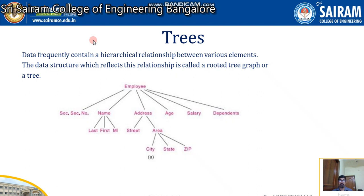Trees answer for that. As you could see in the picture, we have an entity called employee. Employees have IDs — we call it a social security number — and also name, address, age, salary, and dependents. If you look at name, you may have first name, middle name, and last name. This kind of data we cannot store in the form of an array or linked list, so trees are the solution.